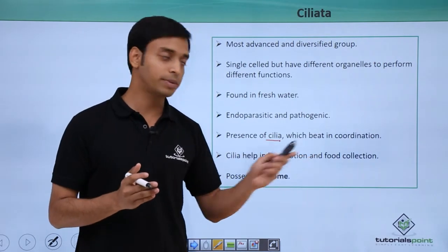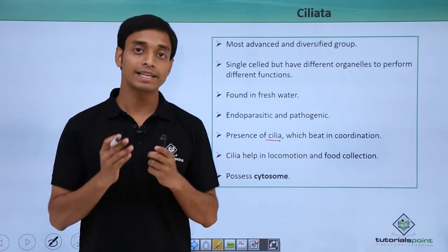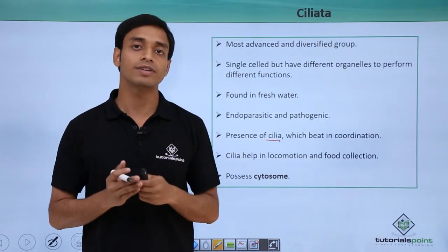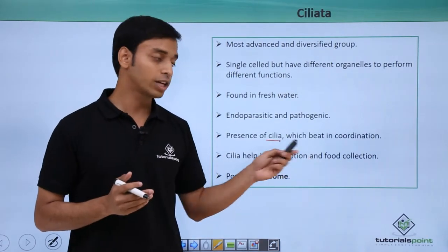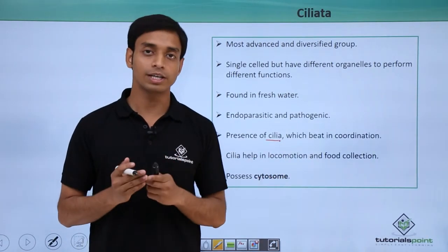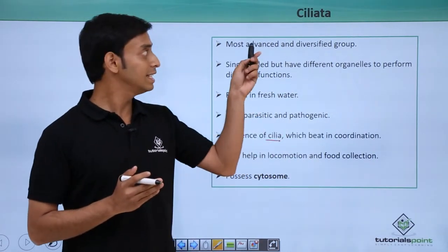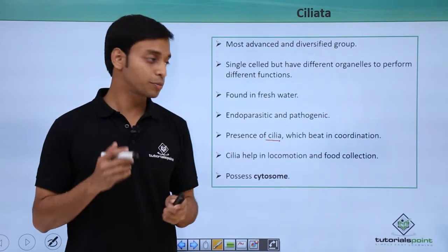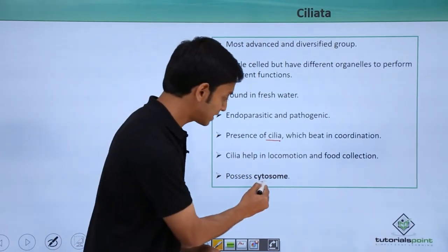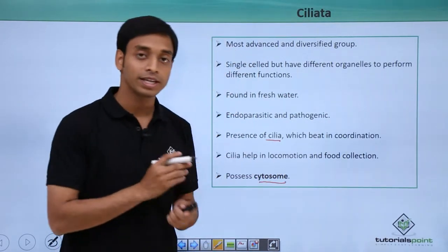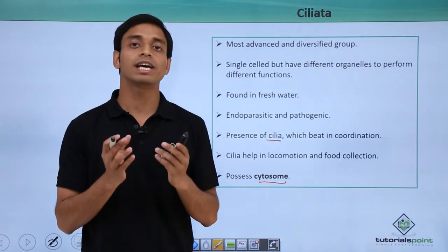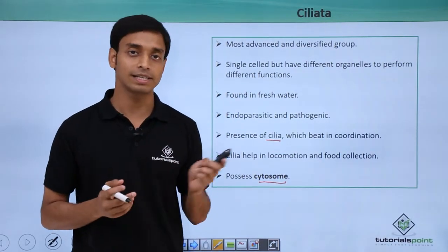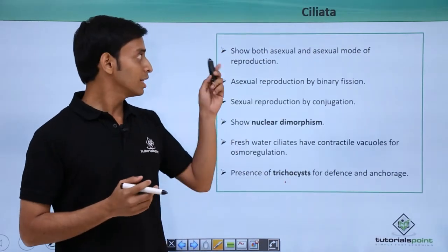The cilia help in locomotion. In addition to that, they also help in the collection of food, similar to pseudopodia which we have discussed. These ciliated protozoans also have specific structures known as the cytosome, which actually help in the feeding habits of these cells.